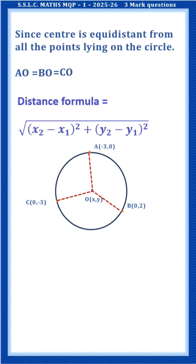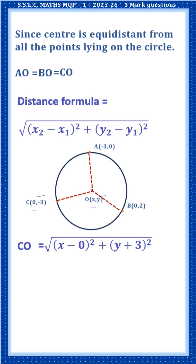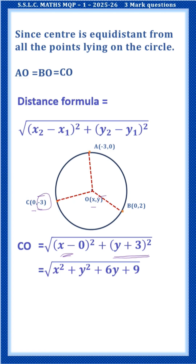Now let us calculate CO. Here x1 is x, x2 is 0, y1 is y, y2 is -3. Substituting: since negative of negative 3 gives positive 3, we get (y+3)² in the expression. Expanding using the (A+B)² formula: CO = √(x² + y² + 6y + 9).